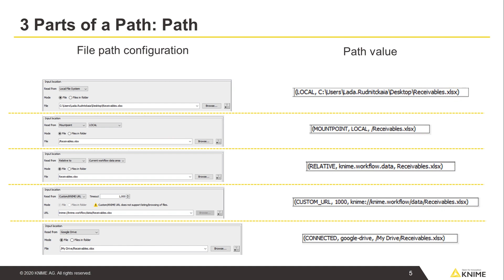The parts of a path correspond to the file location settings in most reader and writer nodes. Paths also have their own dedicated flow variable type.